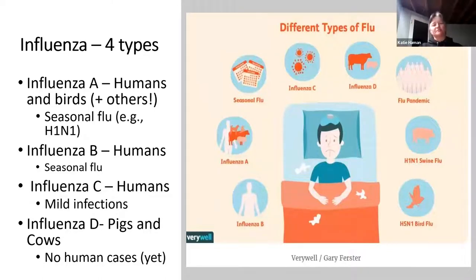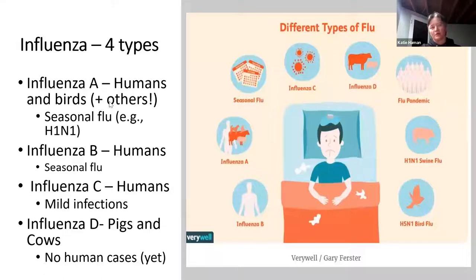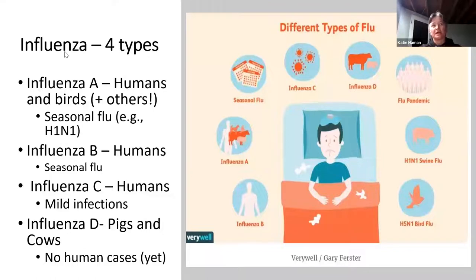There are four different types of influenza in general. When we talk about birds, we're talking about avian influenza, which is typically influenza A. Humans, birds, and a handful of others — if you go to the CDC's website, there's a whole long list of different mammals and species that can be infected with avian influenza. The seasonal flu in humans is typically influenza A H1N1; the things we are vaccinated for on a human level is influenza A.